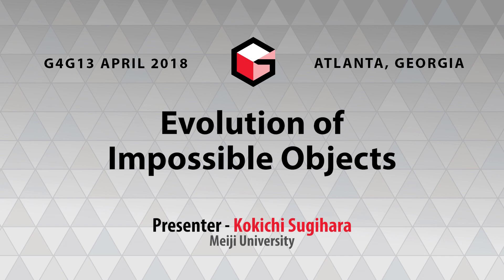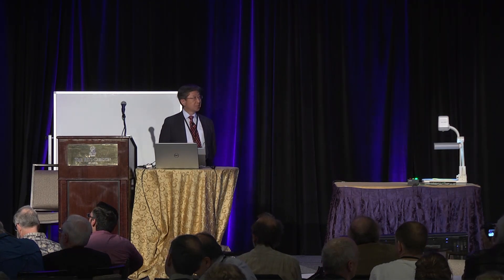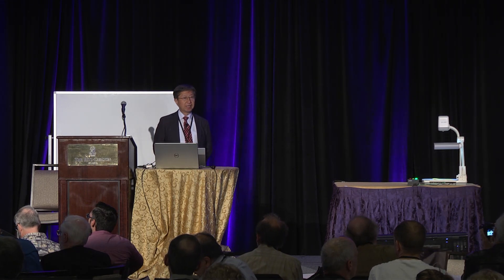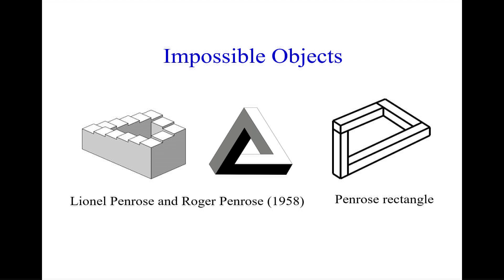My topic is impossible objects. Impossible objects originally meant 3D structures that could not exist as actual physical objects. They could only be represented in pictures, but they are not necessarily impossible because there are some tricks by which we can construct 3D objects.